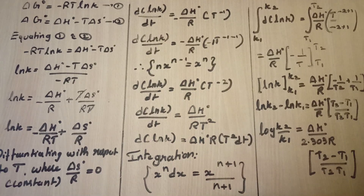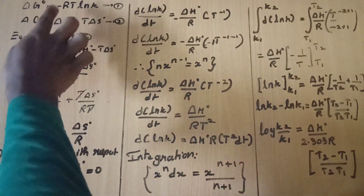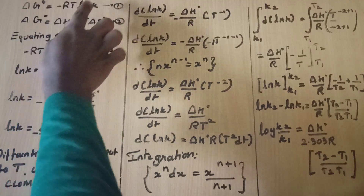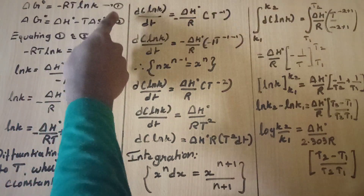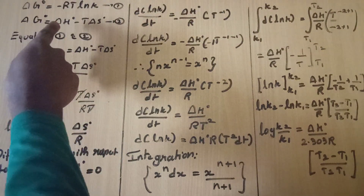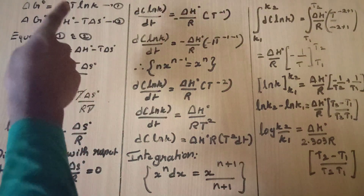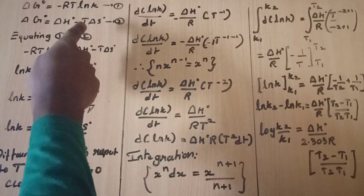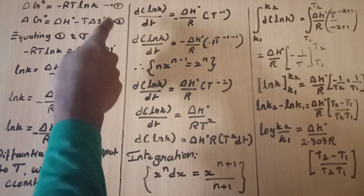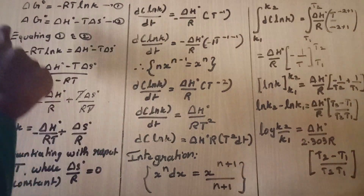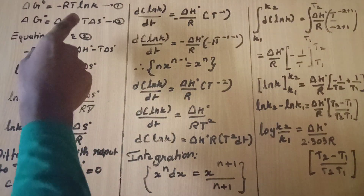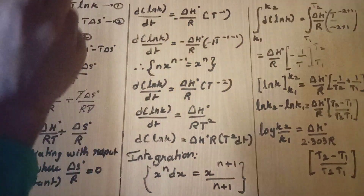The first equation is Delta G dot is equal to R T ln K. The second equation is Delta G dot is equal to Delta H dot minus T Delta S dot. Let's look at these equations.